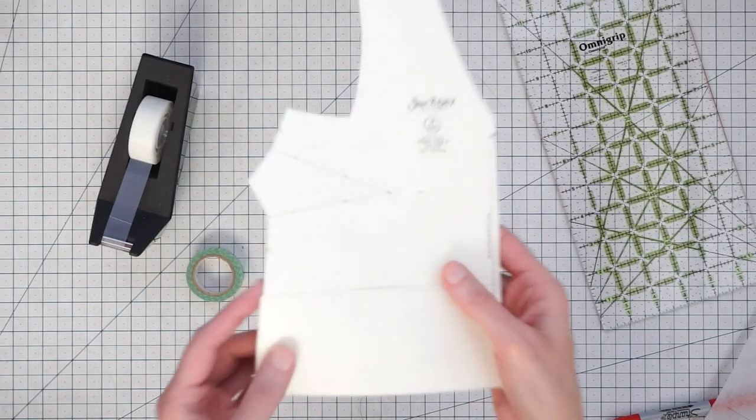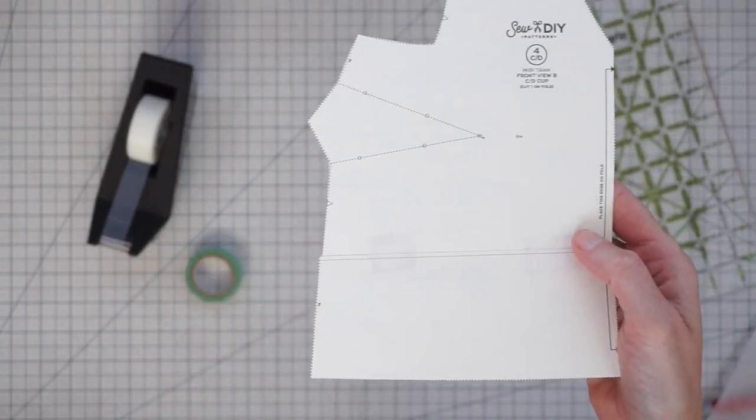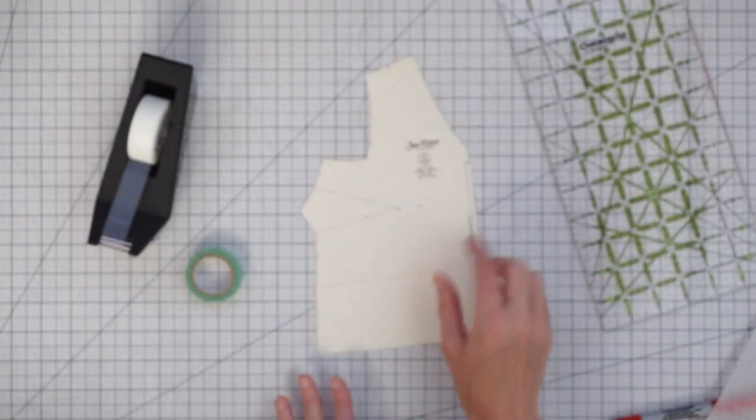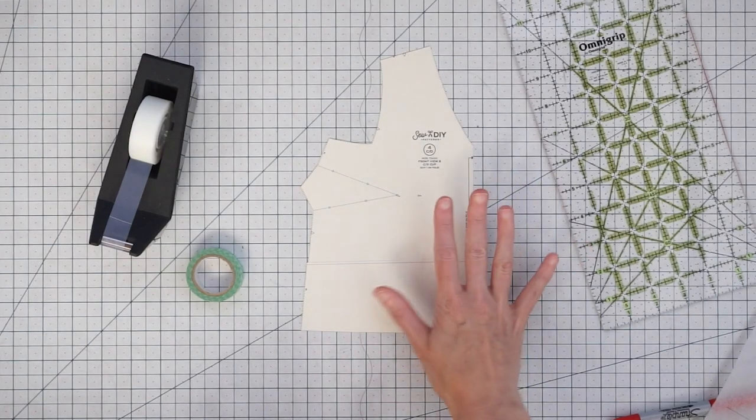You can see here that there's a little bit of a jagged edge and all you do is you just trim that down straight.